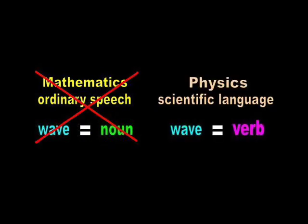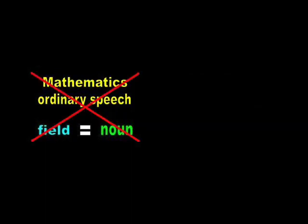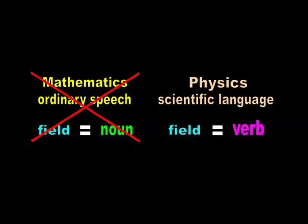Likewise, there is no object in physics known as a field. The word field is also a concept, and as such, it doesn't belong in physics as a physical object.